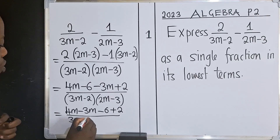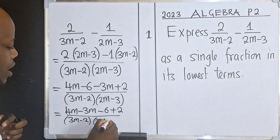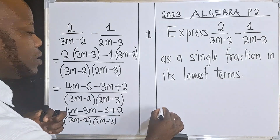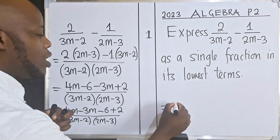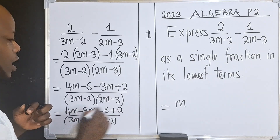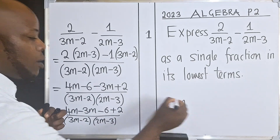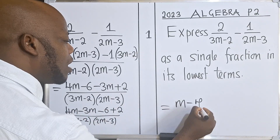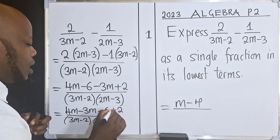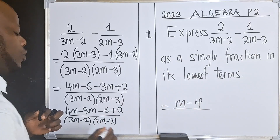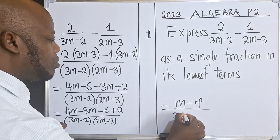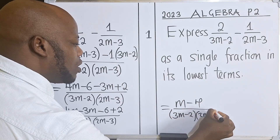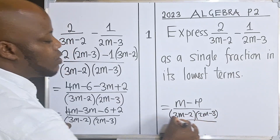That's 3m minus 2, then 2m minus 3. So now from here, we can simplify and say that we have m, because 4m minus 3m is just 1m, so we write m. And then here it will be minus 4, because negative 6 plus 2 is minus 4. We maintain the denominator. So now we have done what we are supposed to do here. This is our answer.